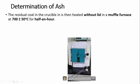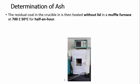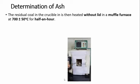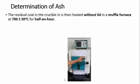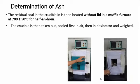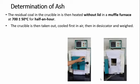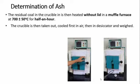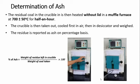For the determination of ash, the crucible is placed without a lid in a muffle furnace at around 700 degrees Celsius for half an hour. We keep it without a lid because we want to calculate only the ash and lose all other contents of the fuel. Since ash is non-combustible matter, whatever residue remains is the weight of ash. After half an hour, the crucible is taken out, kept in open air for cooling, then kept in the desiccator. The percentage of ash is calculated by: weight of residue in the crucible upon weight of coal taken, into 100.